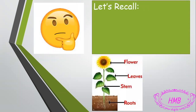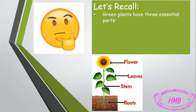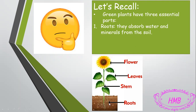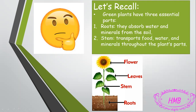Let's recall. We took that we have green plants, or chlorophyllic plants, and they have many parts: we have the flower, leaves, stem, and roots. We also took that green plants have three essential parts. The first part is the roots — the underground parts — they absorb water and minerals from the soil. Second, we have the stem, which is the long part of the plant.